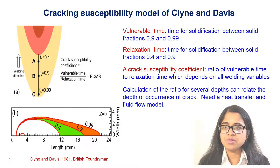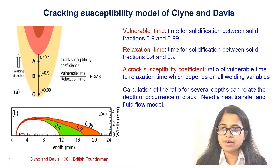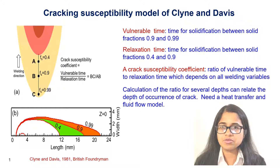The crack susceptibility model used in this work is based on the one by Klein and Davis. Here, a crack susceptibility coefficient — which is the ratio of the vulnerable time to relaxation time — is related to cracking. A higher value of this coefficient indicates greater time of exposure of the two-phase mixture to vulnerable conditions, indicating a greater likelihood of cracking. So, what are these vulnerable and relaxation times?